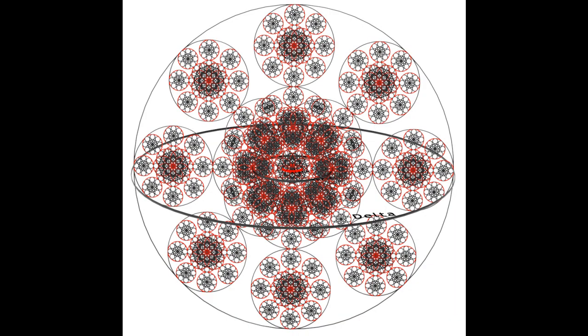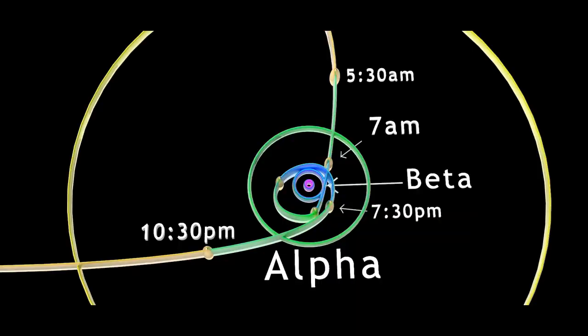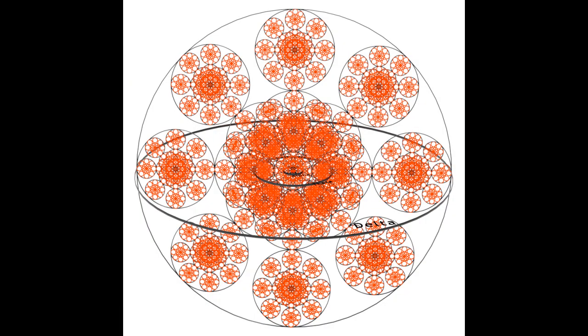The alphaverse. Soon after, at approximately 7 AM, our conscious density then reaches the beta state, which occurs at 37,500 meters from center. The betaverse.